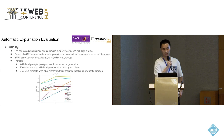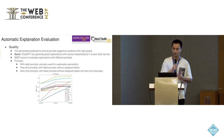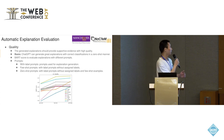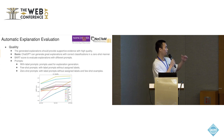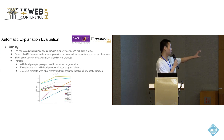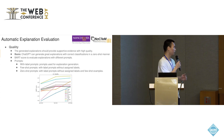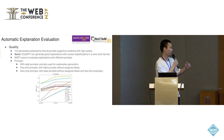The final aspect is quality, evaluating whether the generated explanations can provide supportive evidence with high quality. Previous works have proved ChatGPT can generate great explanations with correct classifications even in a zero-shot manner. We design three different prompting strategies: the with-label prompts used for explanation generation; the few-shot prompts based on the with-label prompts but excluding the assigned labels; and the zero-shot prompts which exclude both the assigned labels and few-shot examples. According to the BARTScore results, the outputs of the with-label prompts are much higher than the zero-shot prompts on most datasets, proving significantly higher quality and supporting the overall quality of our generated explanations.